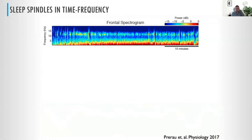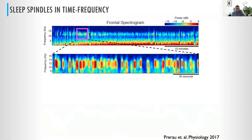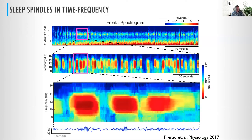Here's a segment of non-REM sleep over about an hour in a multi-taper spectrogram. If we zoom in on the sigma band, we can see this evolves into a lot of little blobs. If we zoom in even further, we say: every time we see a blob, we see a little spindle-like waveform. This could be interesting.